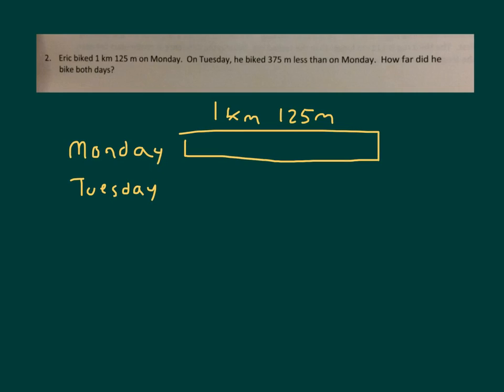Is the bar longer or shorter than Monday's? Write it shorter, and it's shorter by how much? It says 375 meters. The question that's asked is how far did he bike both days? So how far did he bike on both Monday and Tuesday? That's what we are trying to solve for. What we don't know is the amount that he biked on Tuesday, but we do know that it is 375 meters less than what he biked on Monday.